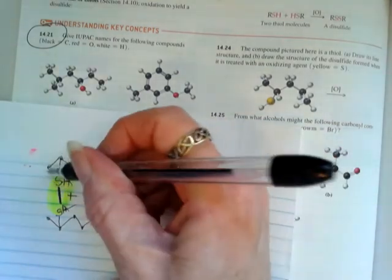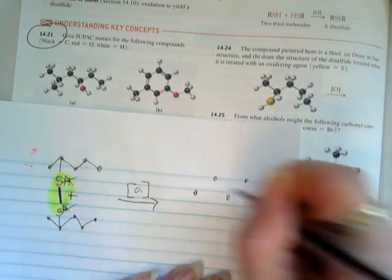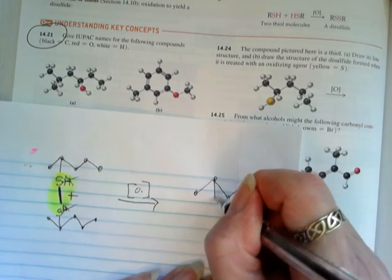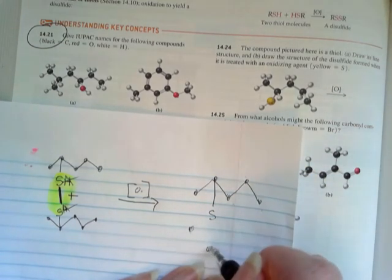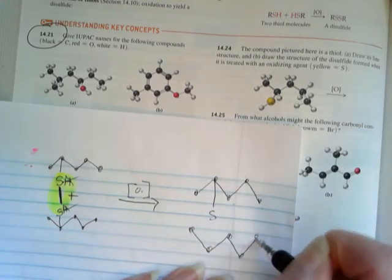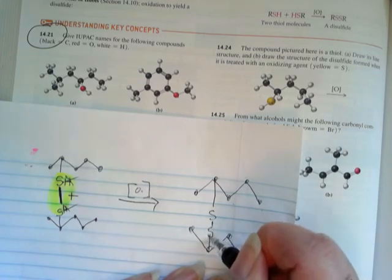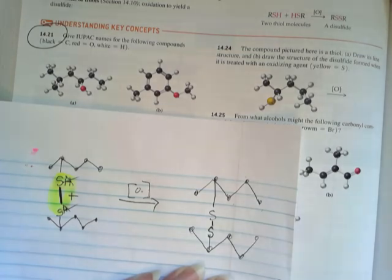And so we've got 1, 2, 3, 4, 5. And off the second one, we've got an S. And then down here, I've got 1, 2, 3, 4, 5. Got an S. And they're going to link up. Disulfide.